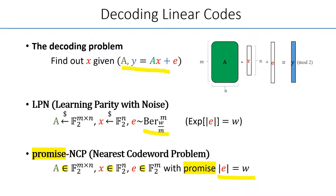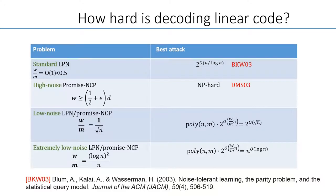We mentioned that some known attacks on the two forms of decoding problems. For the standard LPN, where the noise rate is constant, which means independent of the dimension, the best known attacks are BKW, that has a slightly sub-exponential time complexity.